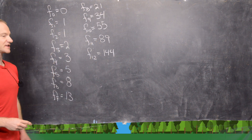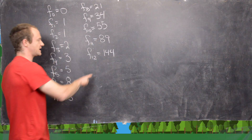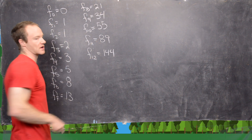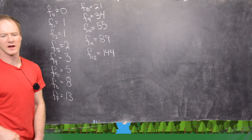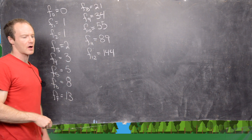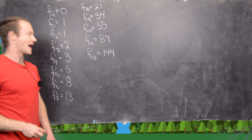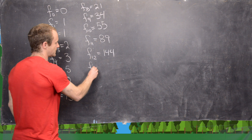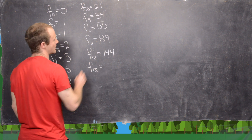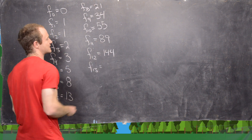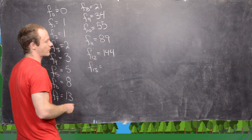And that's actually a special one because here we have 12 squared is 144. I think that's the only time that ever happens. And then the 13th Fibonacci number is 89 plus 144.